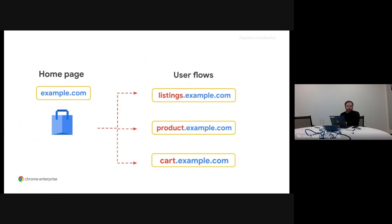Another case we've seen is when you have a product with customers and you want to give them their own branded URLs, using subdomains with the name of their company so they can have their own personalized URL. As we will see, this presents a lot of problems, especially because the user in these cases is not staying in a single origin but moving across them back and forth very frequently.